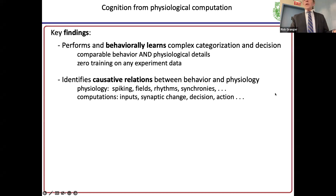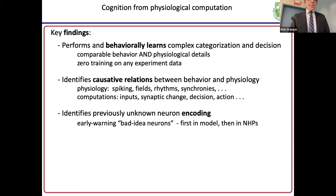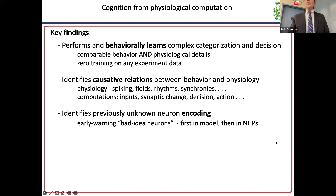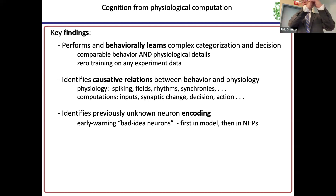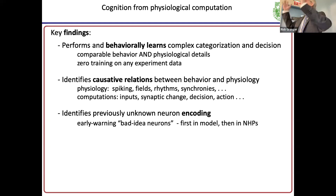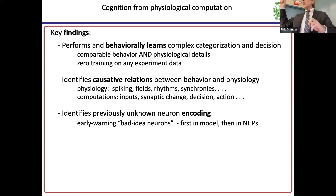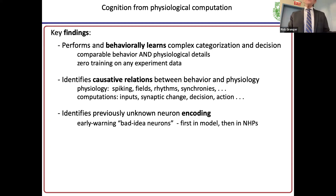One of the key findings is the discovery of a particular encoding — an early warning sign where neurons early in the trial fire selectively when the monkey is about to do the wrong thing, push the wrong button in response to an image. We call them 'bad idea neurons.' These occurred in the simulation, and only later did we discover that they also occurred in the monkey.